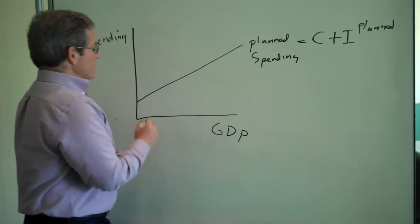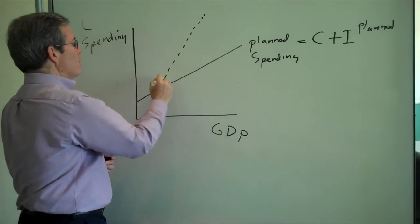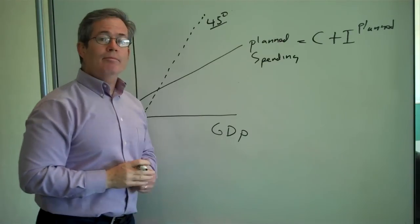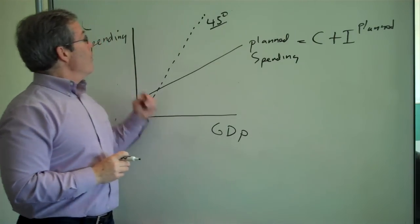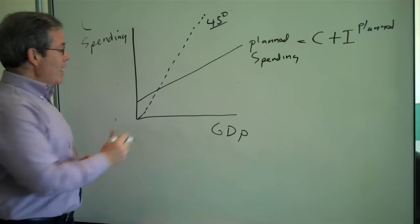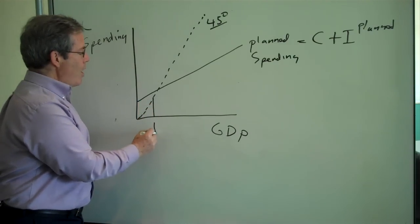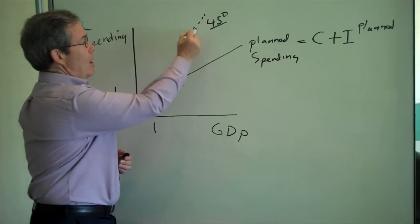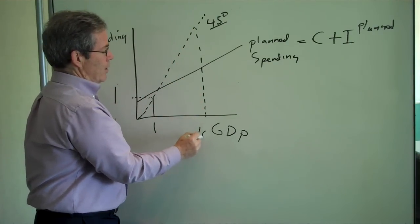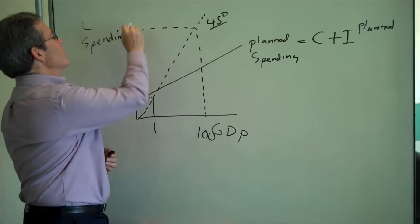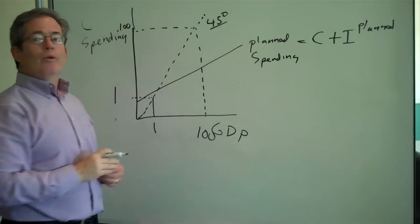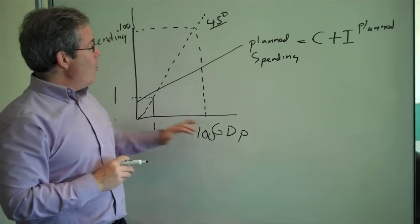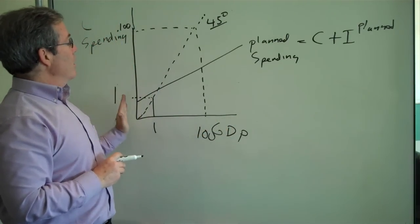Now we're going to draw in a line which is a 45 degree line. And a 45 degree line takes any number on the horizontal axis, say 1, and if you go over to the vertical axis, you get 1. Up here, if you have 100, you go over to the vertical axis, you get 100. So, the 45 degree line makes whatever's on the horizontal axis equal to what's on the vertical axis.